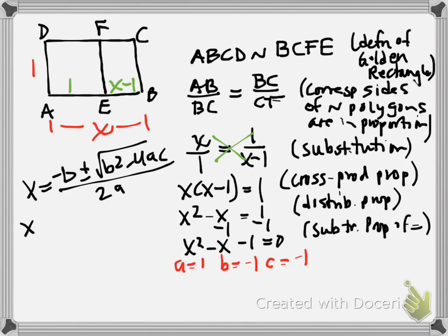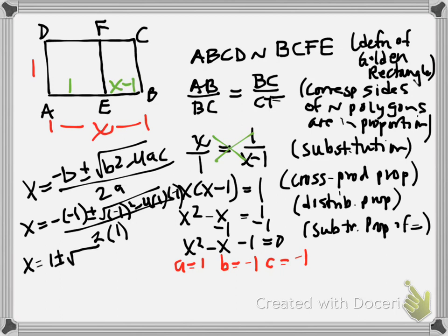We get X equals the negative of negative 1 plus or minus the square root of negative 1 squared minus 4 times A, which is 1, times C, which is negative 1, all over 2 times A, which is 1. We do some math and get 1 plus or minus the square root of 1 plus 4, all over 2. And we get X is equal to 1 plus or minus the square root of 5 over 2.